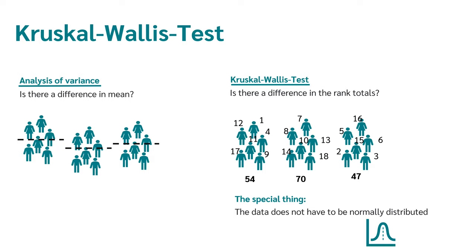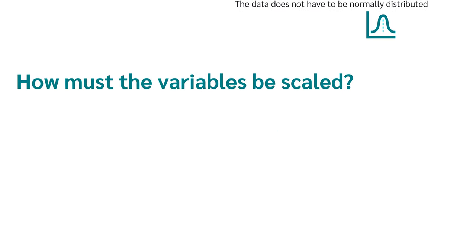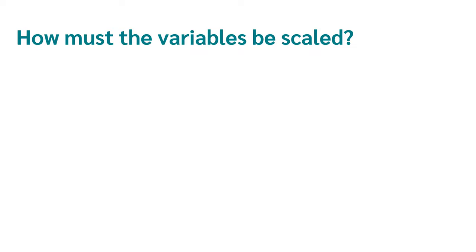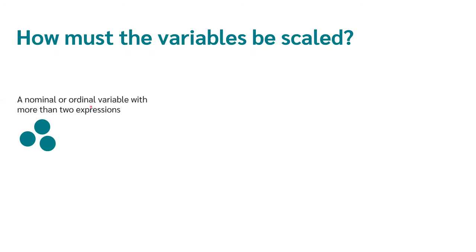The big advantage is that by looking at rank sums rather than mean differences, the data does not have to be normally distributed. When using the Kruskal-Wallis test, our data does not have to satisfy any distributional form. Before we discuss how the Kruskal-Wallis test is calculated — and don't worry, it's really not complicated — we first take a look at the assumptions. We use the Kruskal-Wallis test if we have a nominal or ordinal variable with more than two values and a metric variable.